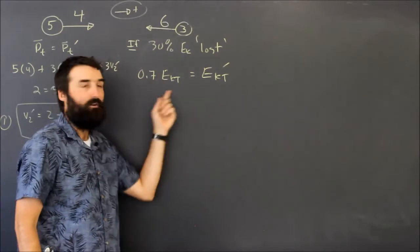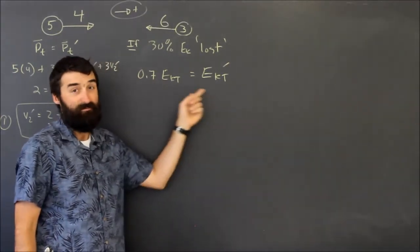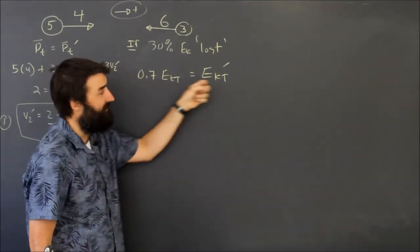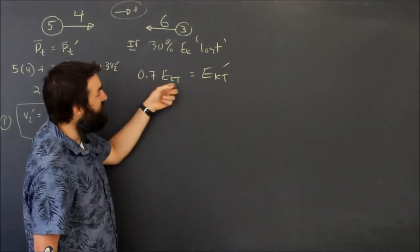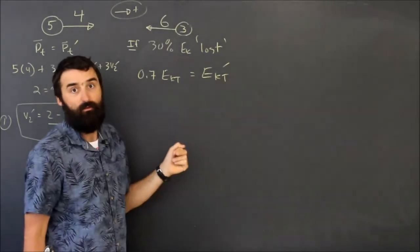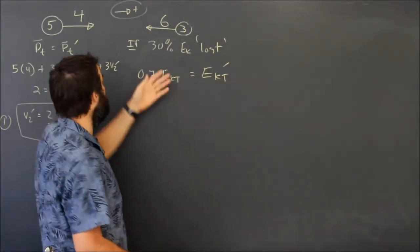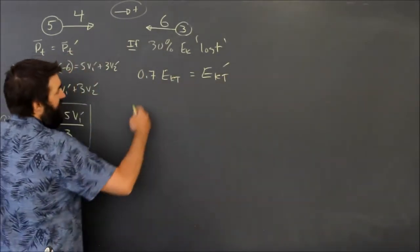Afterwards, and this is where so many students mess this up, especially the first time they try it - they put the 0.7 over here. I don't know why. Math. Because math. 70% of what you started with is what you end up with.